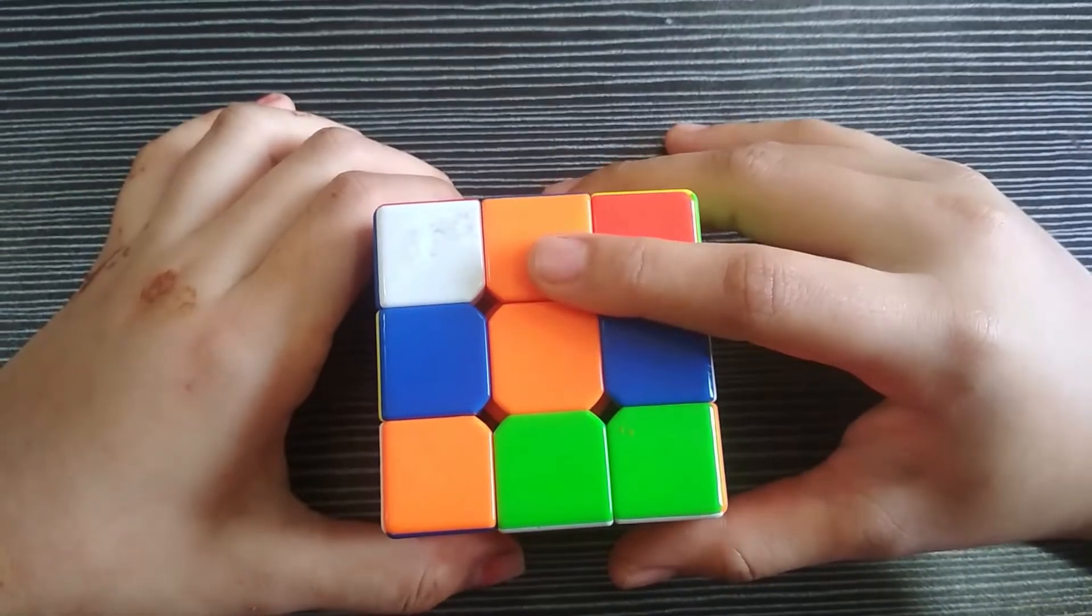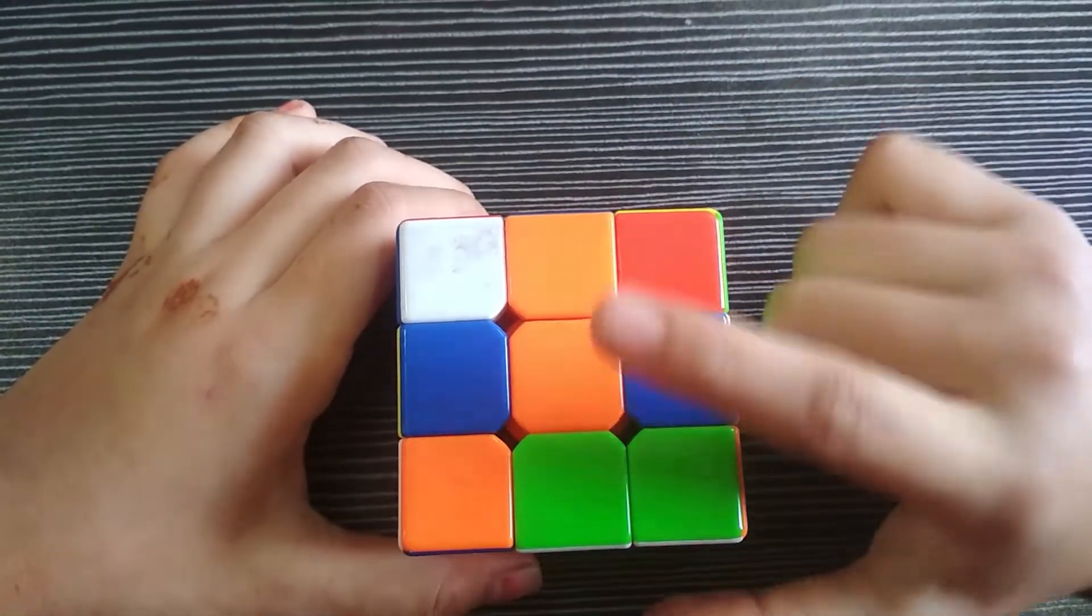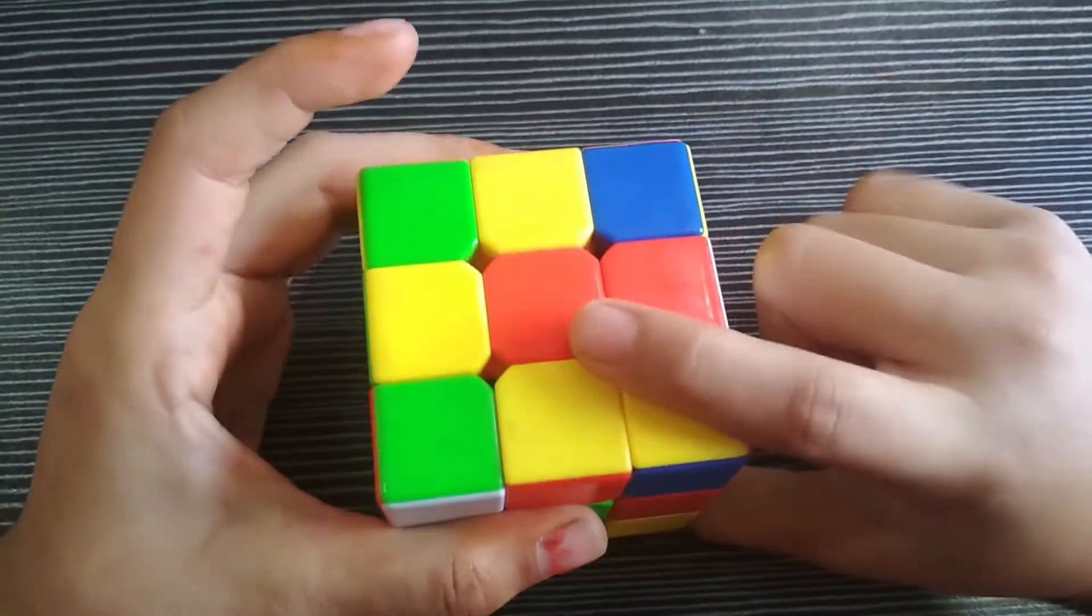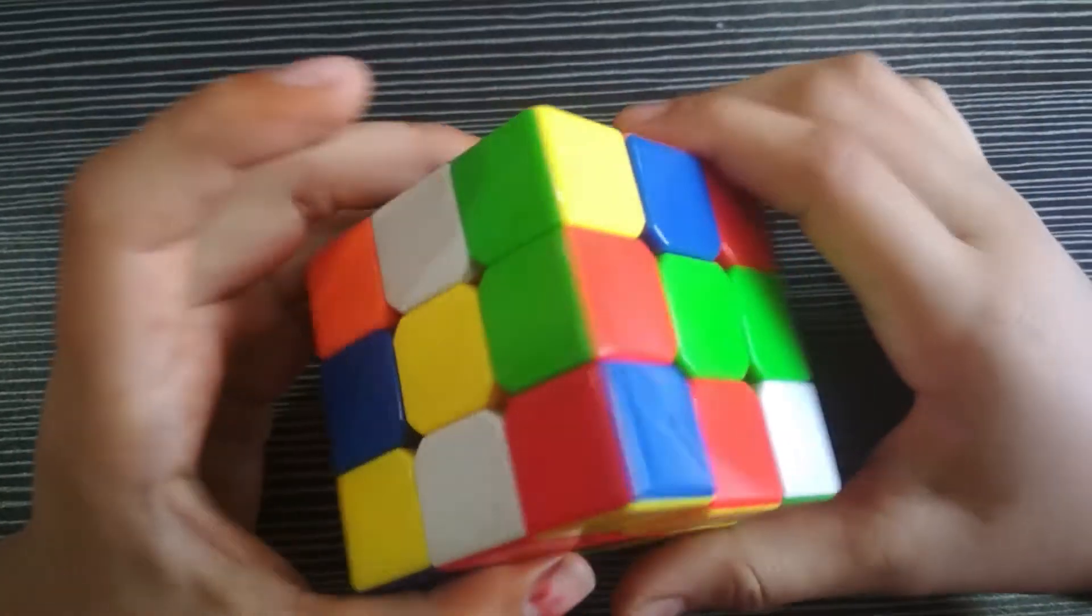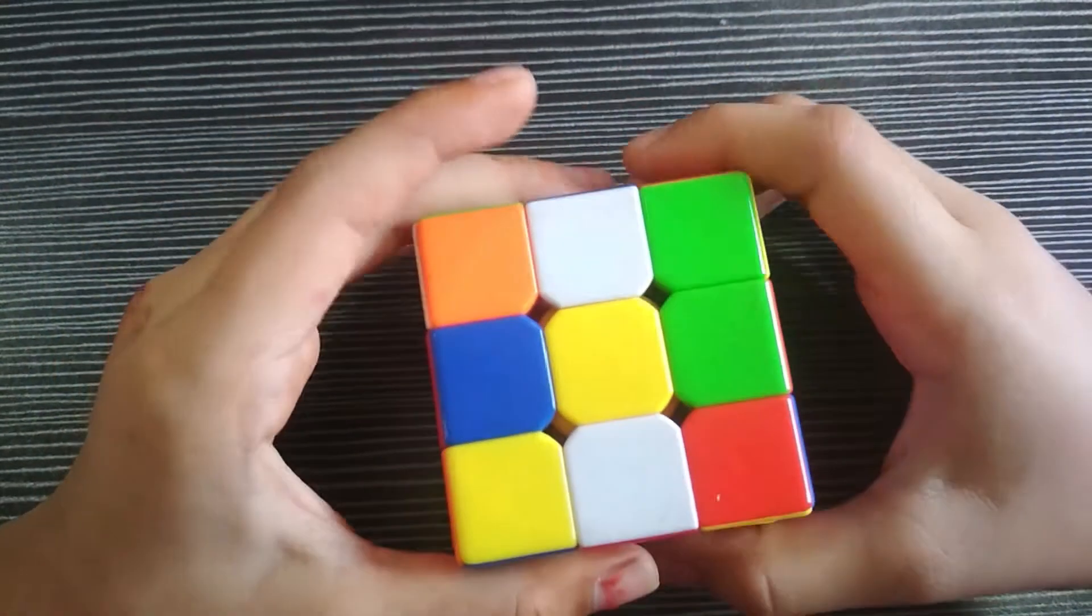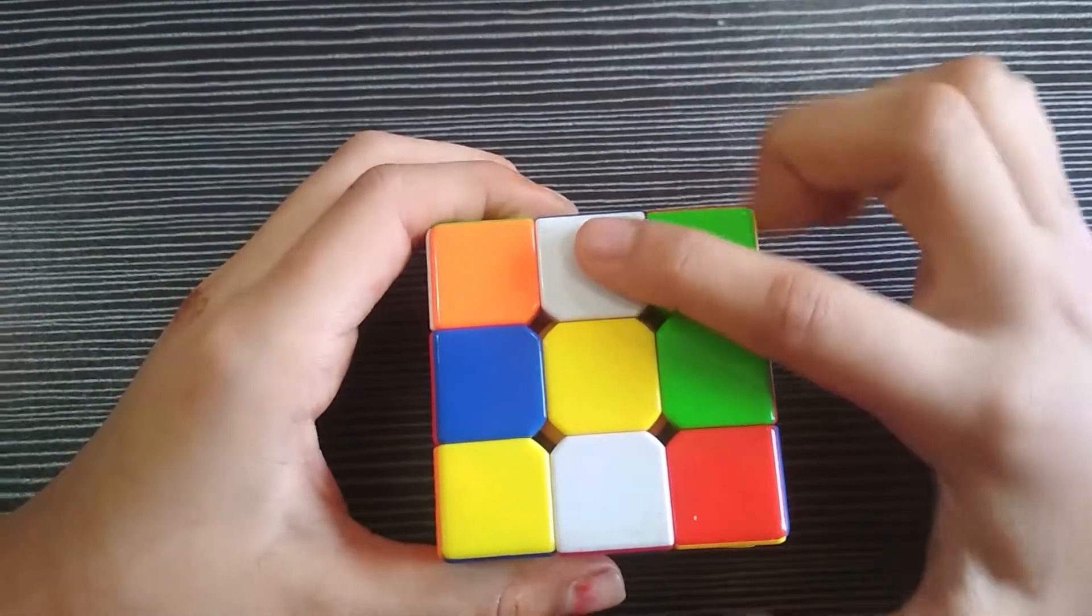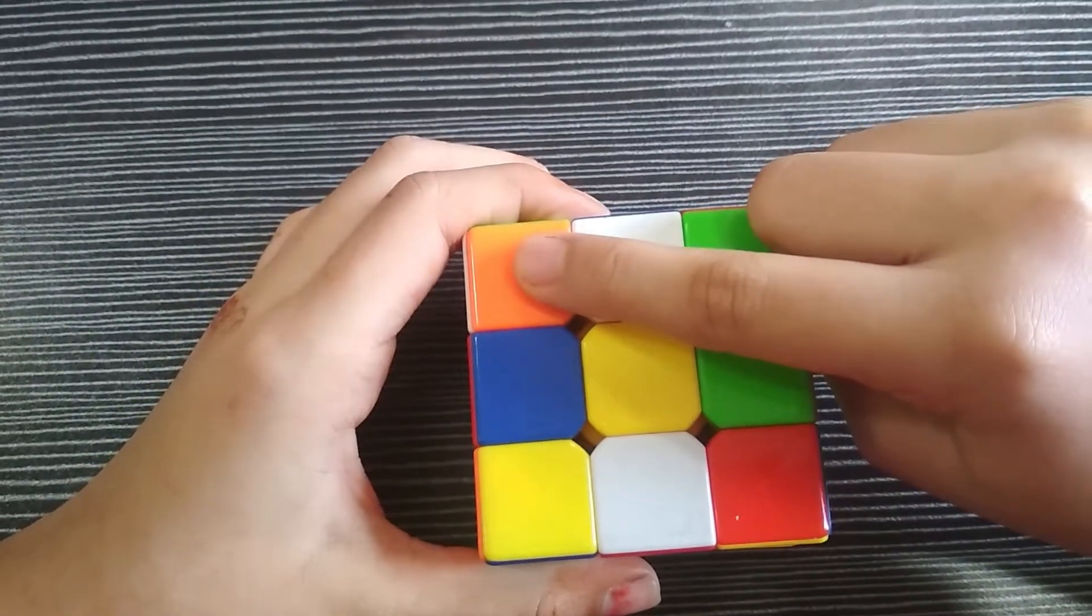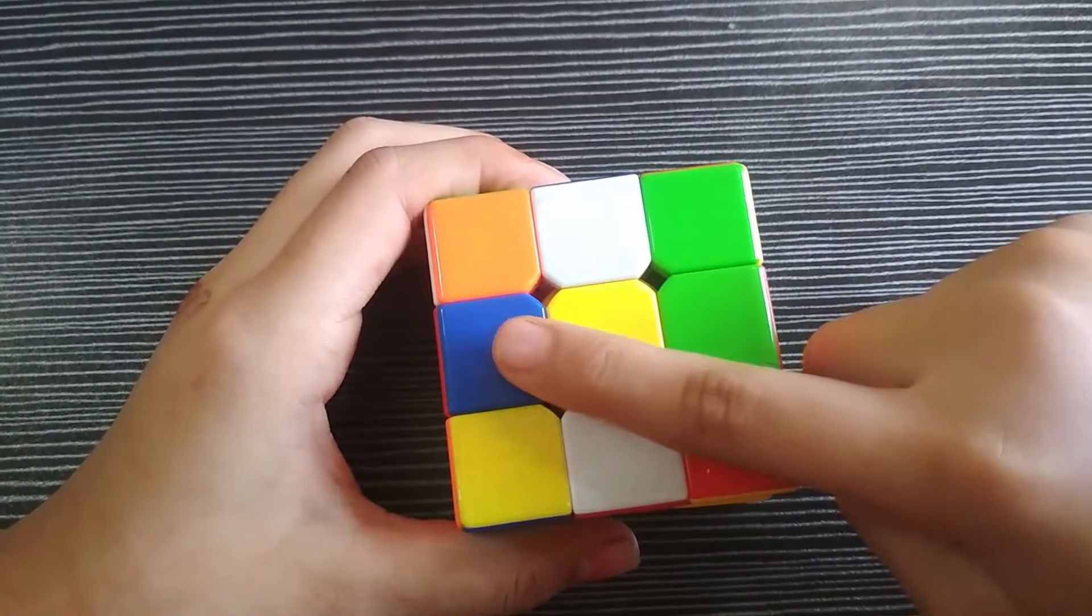So this is a Rubik's cube. It has 6 faces: 1, 2, 3, 4, 5, and 6. And it has 6 colors which are white, yellow, orange, red, green, and blue.